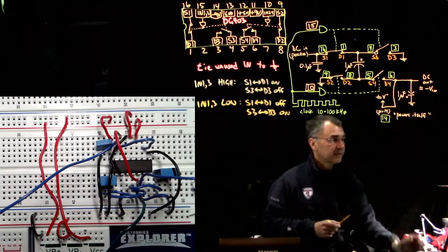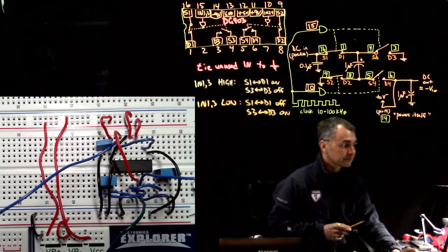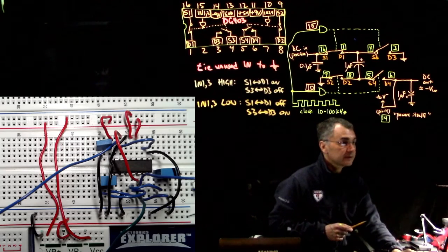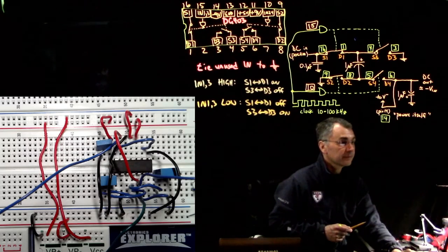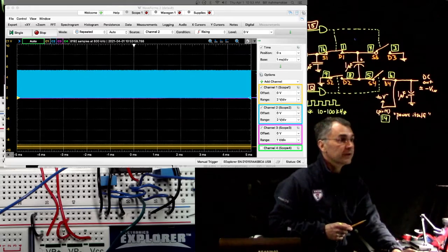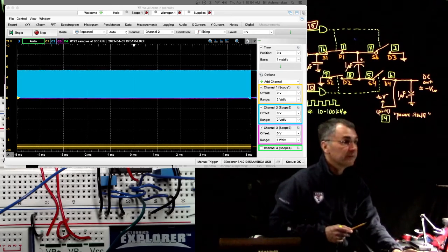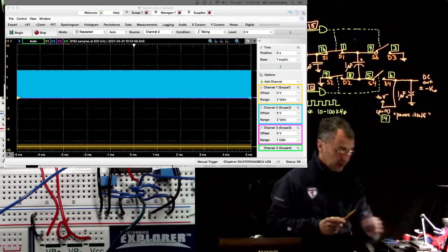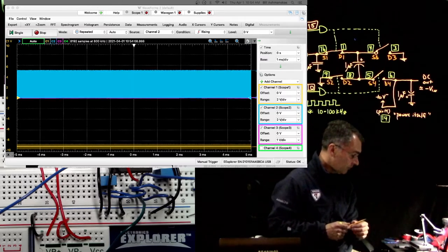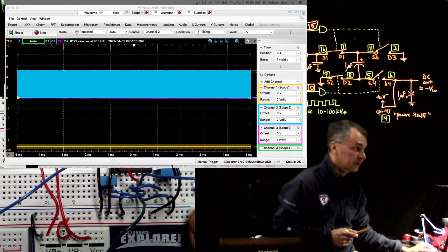Okay, and then let me show you that it seems to work. So the yellow trace here is scope channel 1. It seems to be minus 9 volts.